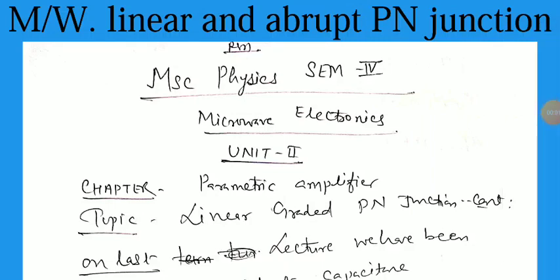Good morning students, myself Dr. R.C. Chuhan, Associate Professor, Samrat Prathiraj Chuhan Government College Azmir. Today we will discuss MSc Physics Semester 4th, the topic related with Microelectronics. The chapter is Parametric Amplifier and the topic is Linearly Graded and Abrupt P-N Junction.